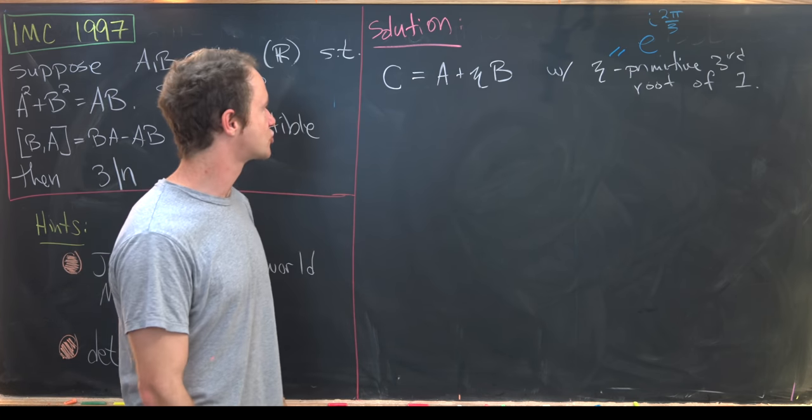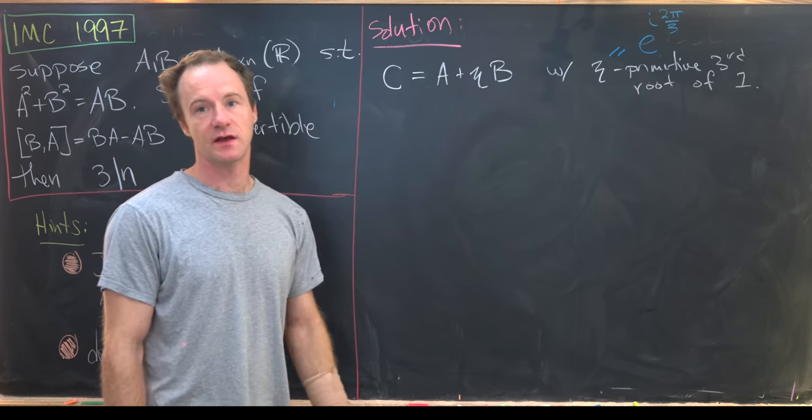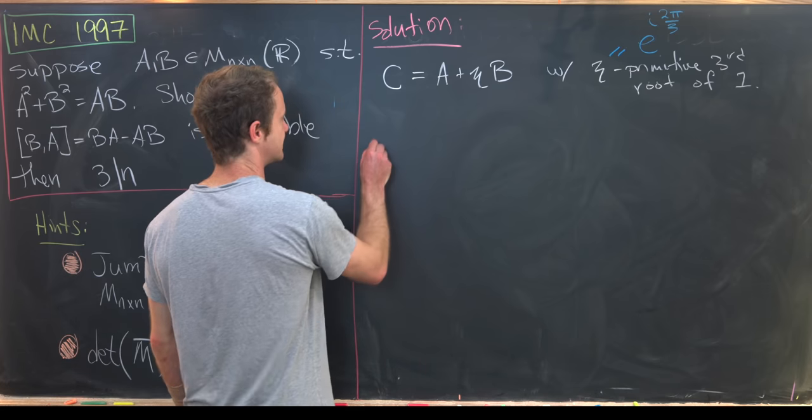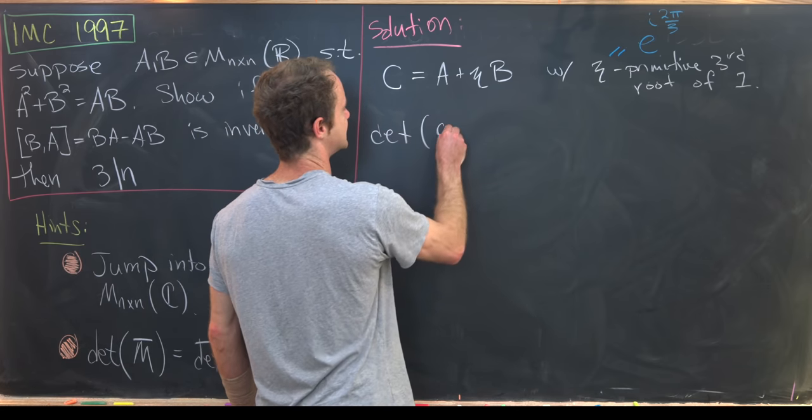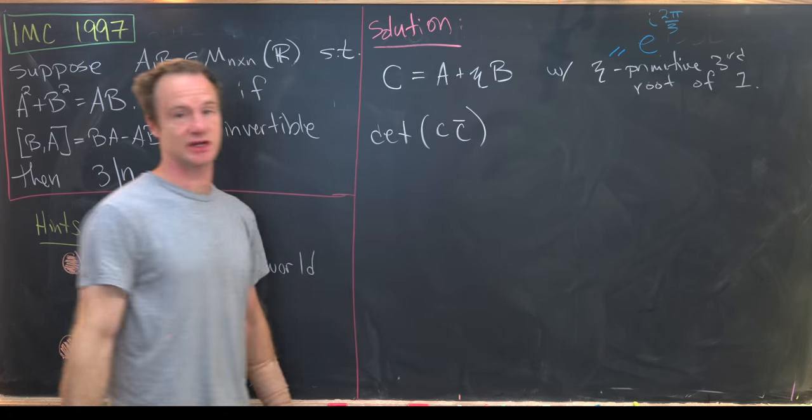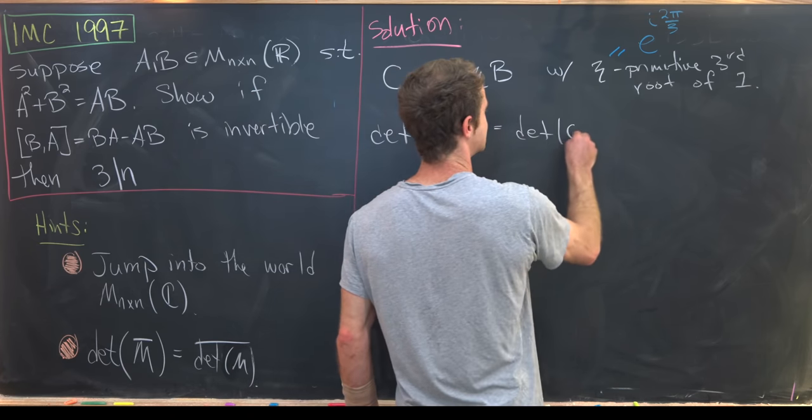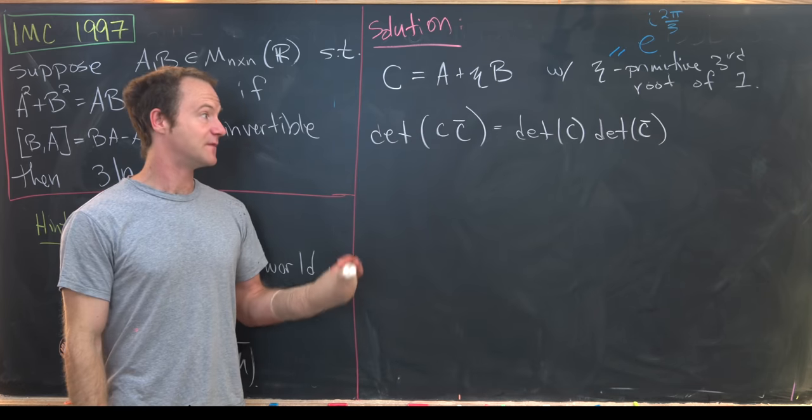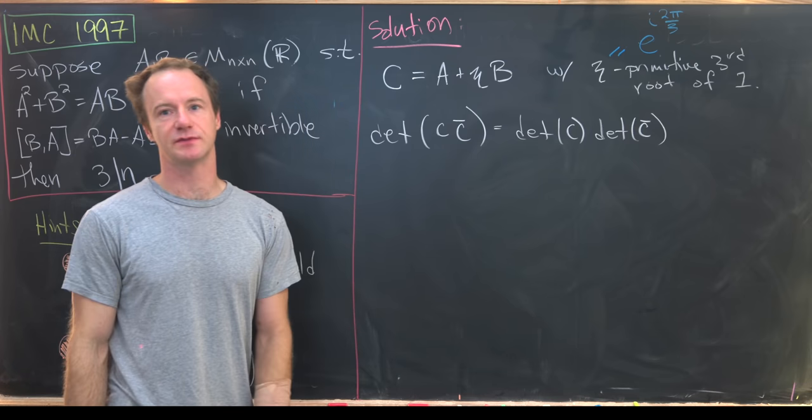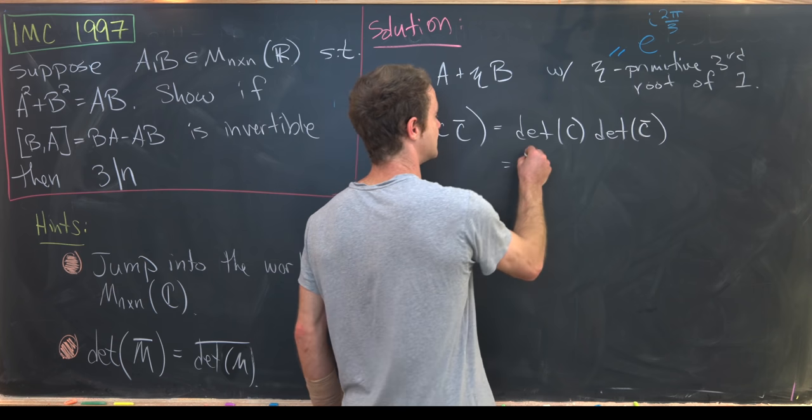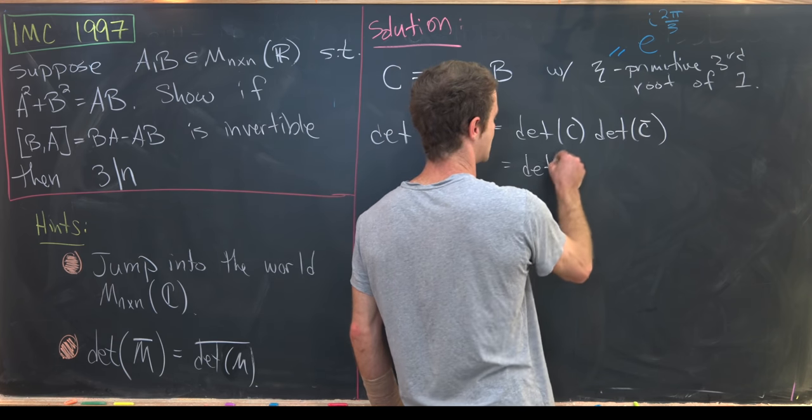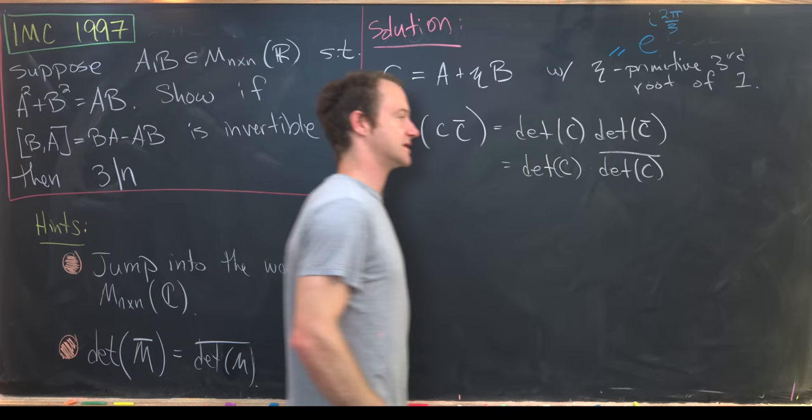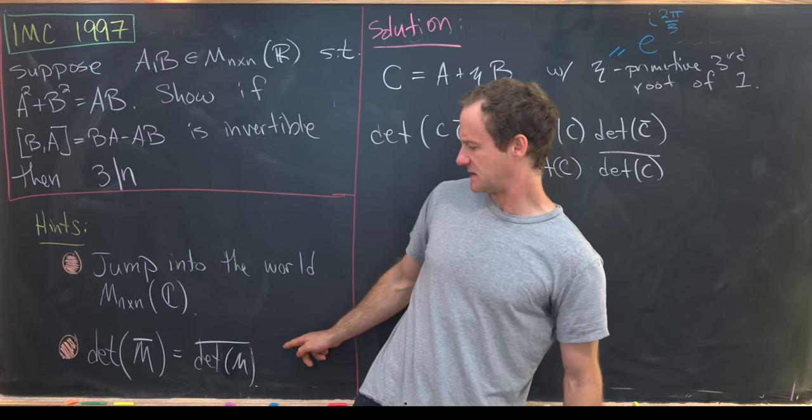And now the major trick here is to look at the determinant of this matrix C times its conjugate two different ways. So let's start like this. The determinant of C times its conjugate is equal to the determinant of C times the determinant of C conjugate. That's because the determinant is a multiplicative function.